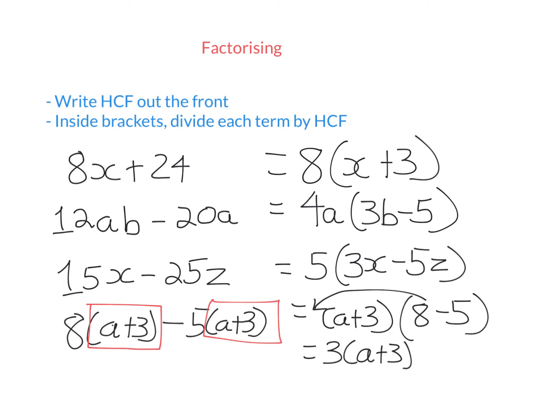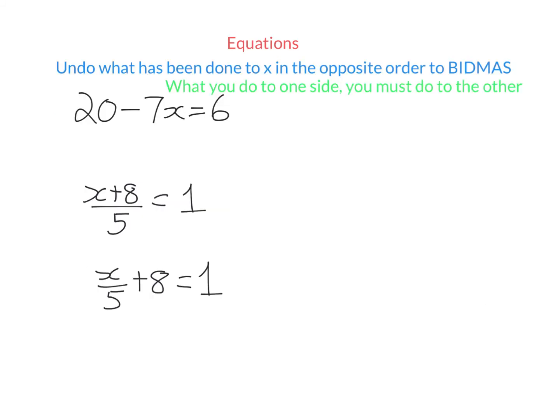Let's move on now to equations. As I said on the very first slide, equations are where you have an equal sign. What we do with equations is solve them — we want to find a value that we can substitute for the pronumeral, usually x, to make the statement true. You undo what has been done to x in the opposite order to BIDMAS, and make sure you follow this rule: what you do to one side, you must do to the other.